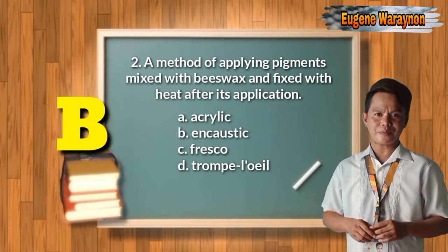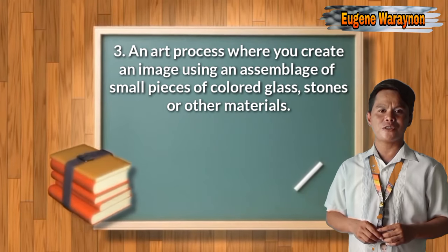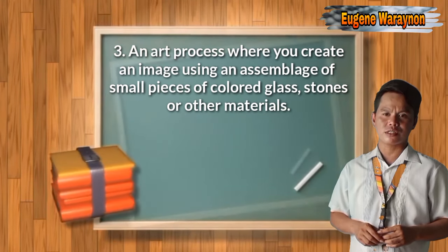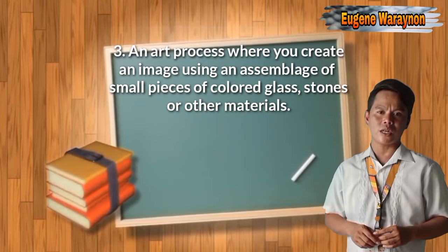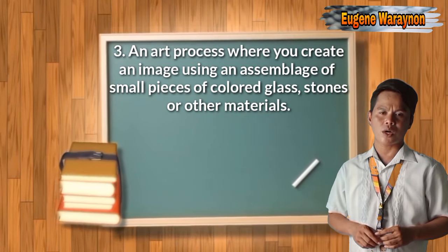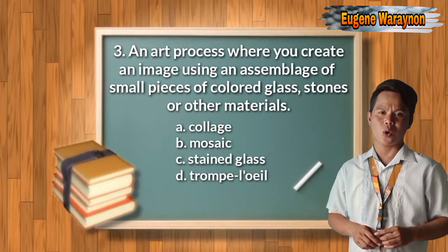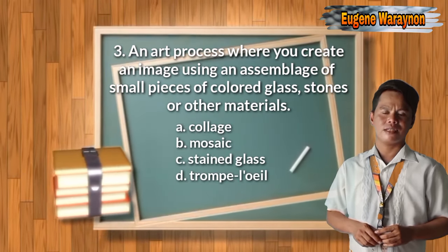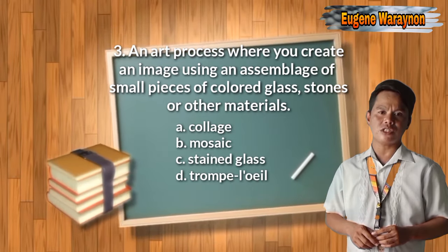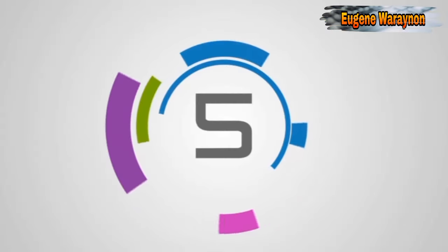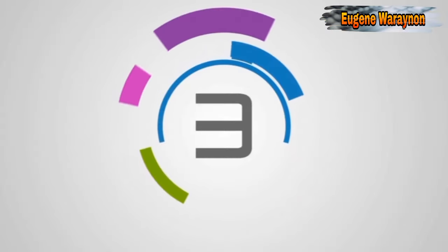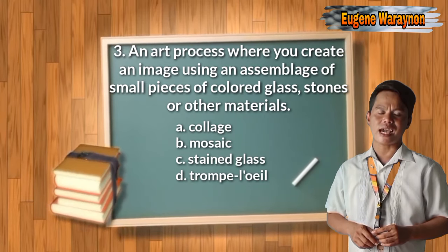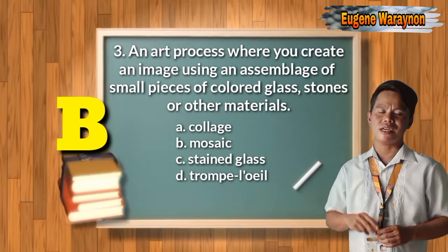Number three: an art process where you create an image using an assemblage of small pieces of colored glass, stones, or other materials. A. Collage, B. Mosaic, C. Stained Glass, D. Trompe-l'oeil. The answer is letter B, Mosaic.